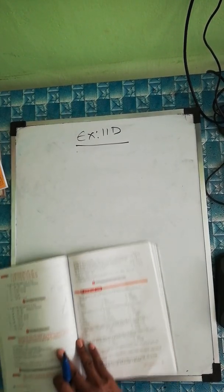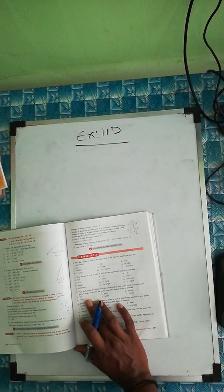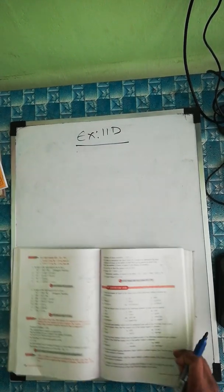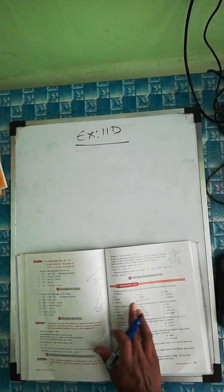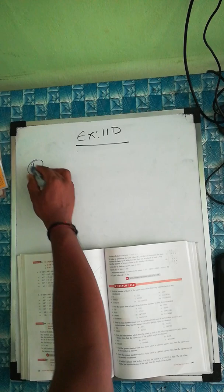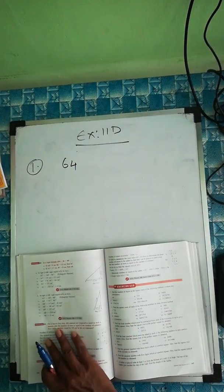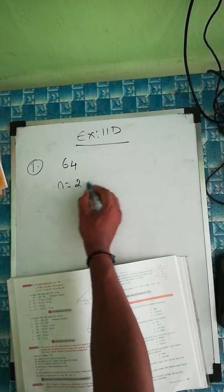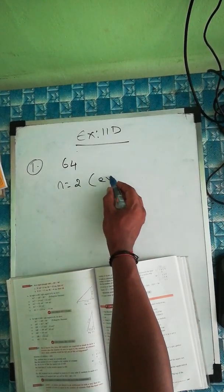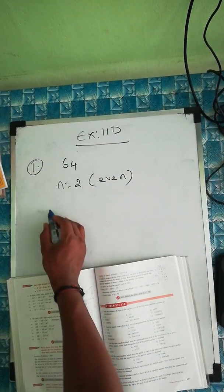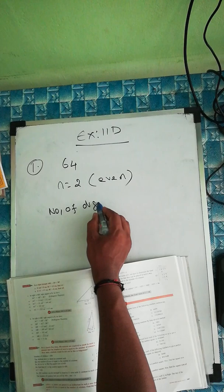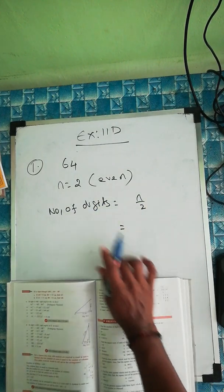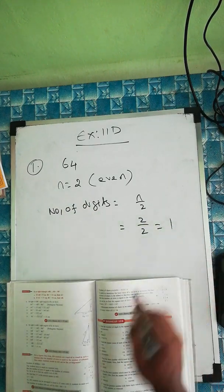The next exercise is 11d. The first question: find the number of digits in the square root of the following numbers without any calculation. So the first number is 64. How many digits are there? One, two — two digits. So n equals two. Two is an even number. If it's even, the formula is: number of digits equals n by two. Here, two by two equals one. So the number of digits is one.